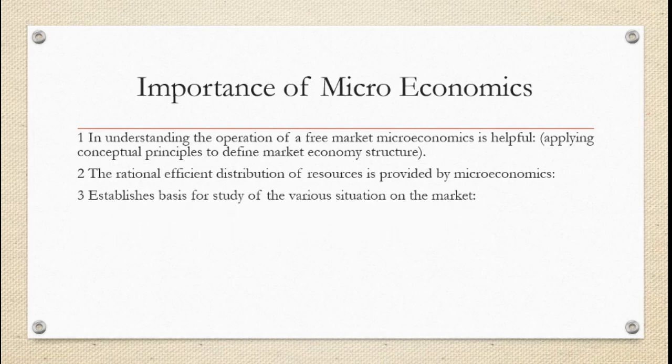The third point is that microeconomics establishes a basis for studying various situations in the market. In the market there are many types — for example, oligopoly market, duopoly market, perfect competition, monopoly, and monopolistic competition. Microeconomics helps us understand how all these market structures work.